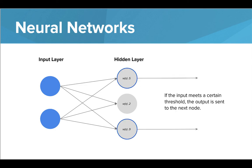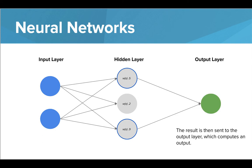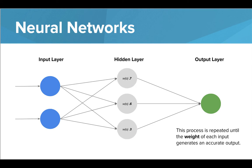If the input meets a certain threshold, meaning the weight of the specific input is high enough or important enough, then the output is sent to the next node. The result of each successful node is then sent to the output layer, which computes an output based on the various node data that it's sent. This process is repeated until the weight of each input generates an accurate output.